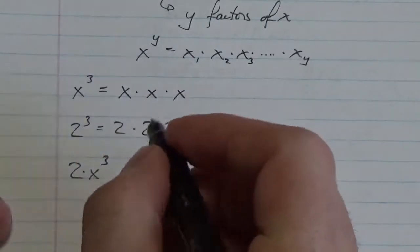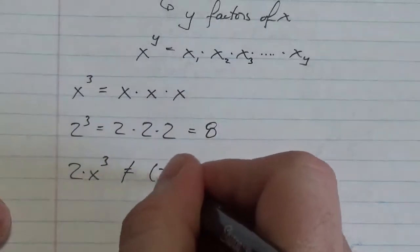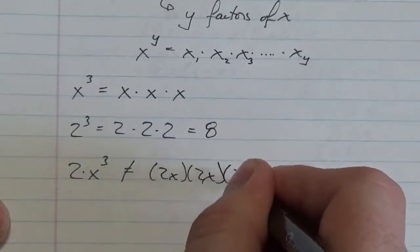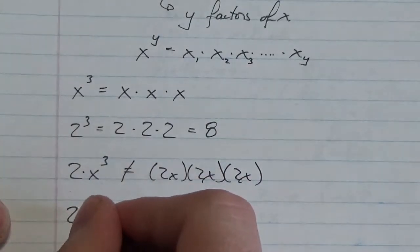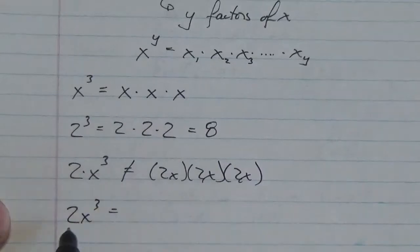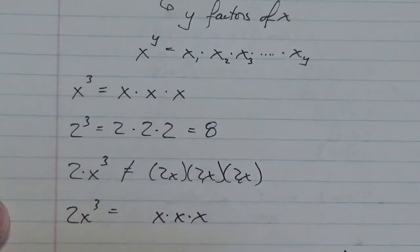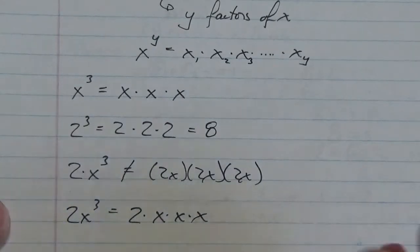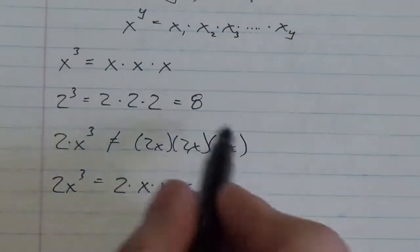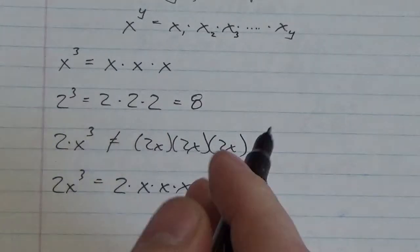So this is not equal to 2x multiplied by 2x multiplied by 2x. 2x cubed is equal to - let's do the exponent here first - it's going to be x times x times x, and then I multiply that by a factor of 2.